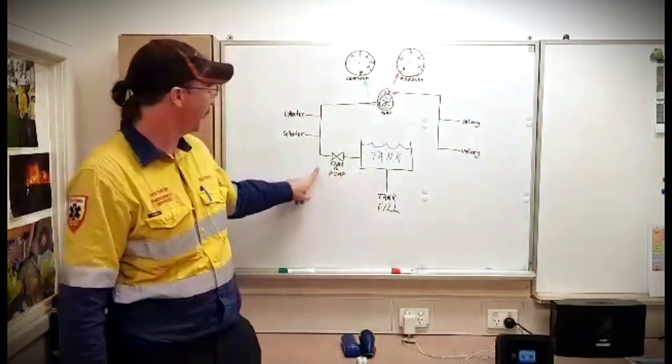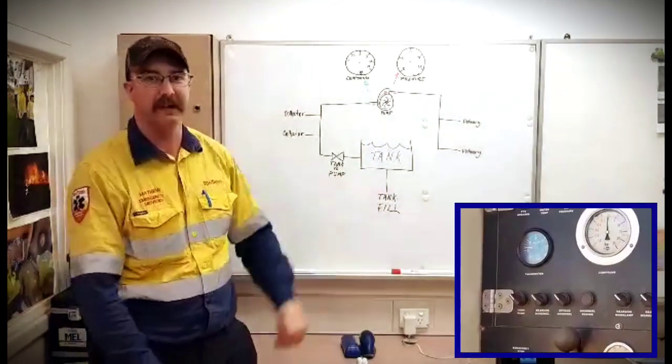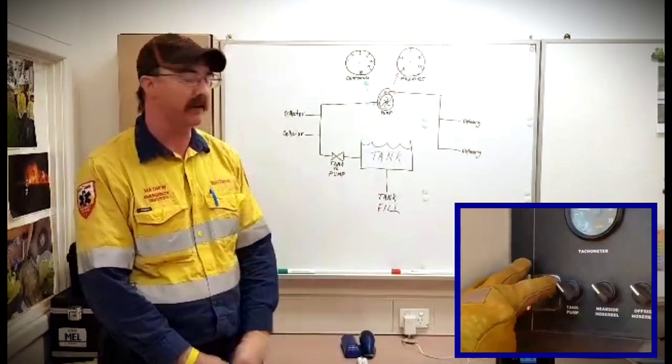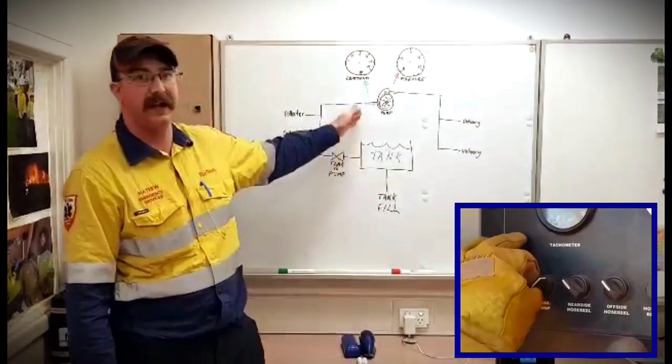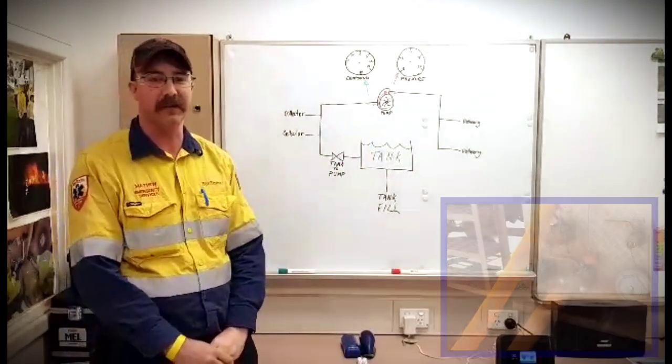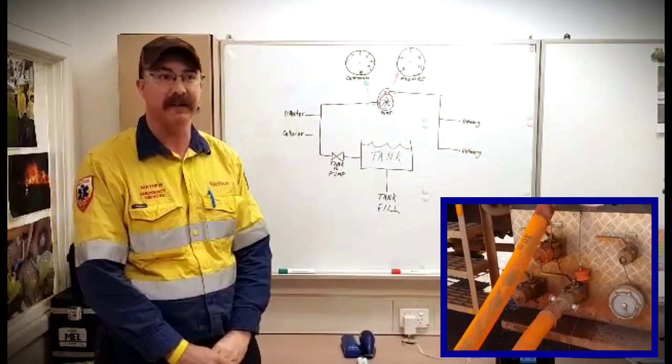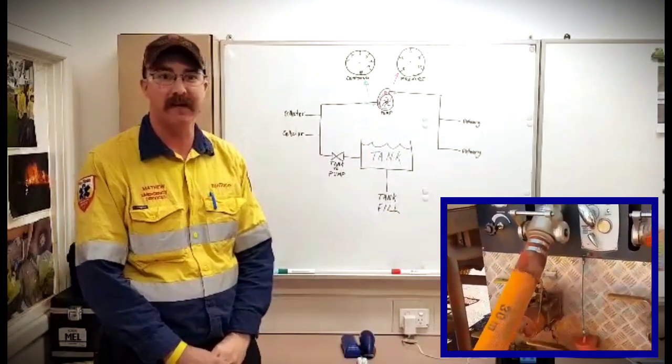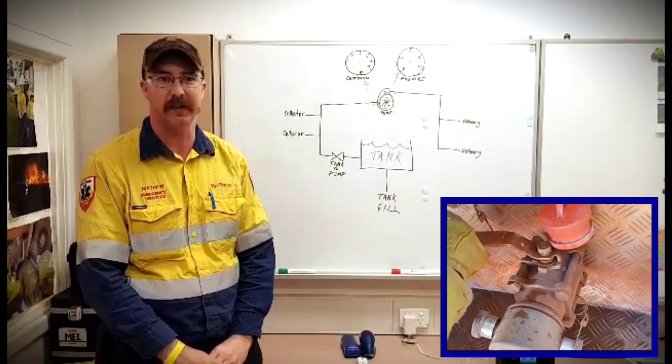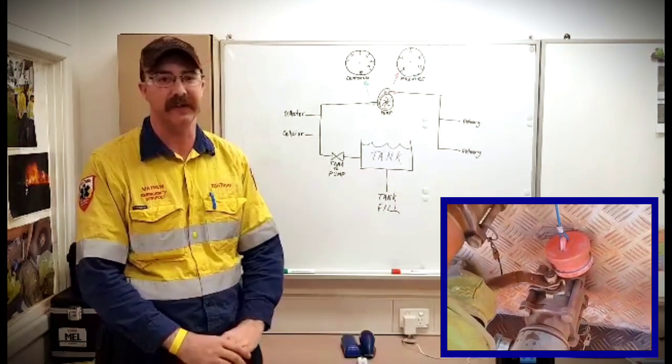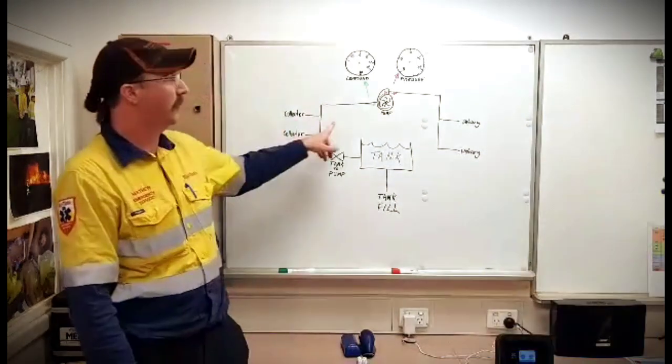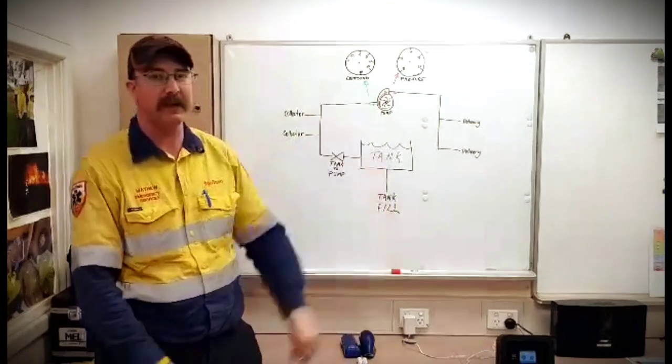When we move down the plumbing we're going to reach our first valve. This is our tank to pump valve. It's called that because it controls the water between our tank and our pump. Moving down along the plumbing here we'll come to our collectors. Now once again these are a normal ball valve or on our bigger suction collectors this will be our 100mm stort fitting which is an uncontrolled inlet. Moving down the plumbing again we'll end up at our pump.